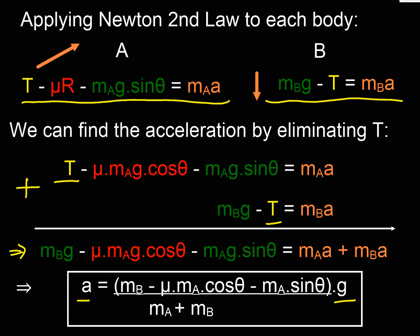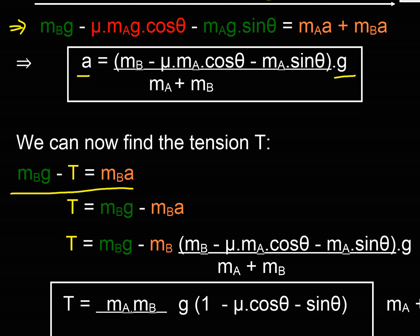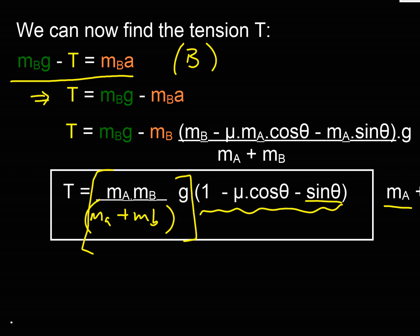Adding the two simultaneous equations eliminates T, giving an expression that can be rearranged to find the acceleration — again as a function of g, with a multiplier depending on the angle of the slope and the coefficient of friction. Substituting back into the F = ma equation for body B and rearranging gives the tension T, with m_A + m_B as the total mass in the denominator, similar to the previous pulley example.